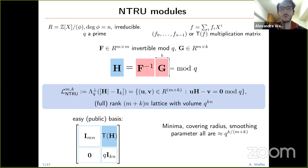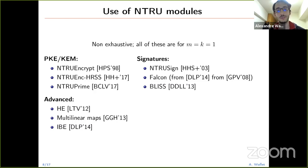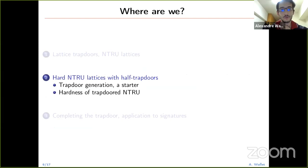To conclude the introduction, all the schemes I listed — and the list is not exhaustive — are for m=k=1. You can do essentially elementary cryptographic functionality quite efficiently, including more advanced things like homomorphic encryption, IBE, or multilinear maps. NTRU lattices are already quite liked in the cryptographic realm. I will now jump into how to generate a trapdoor and discuss the hardness of the NTRU lattice.